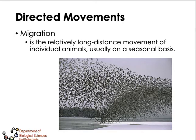Another commonly known directed movement is migration — a long-distance movement of individual animals, usually on a seasonal basis, where a whole population transfers from one area to another. For example, to escape winter they move down toward the equator, and after winter they return. This is part of the genetic material of the organisms, as they respond to seasonal or climatic changes in the environment.